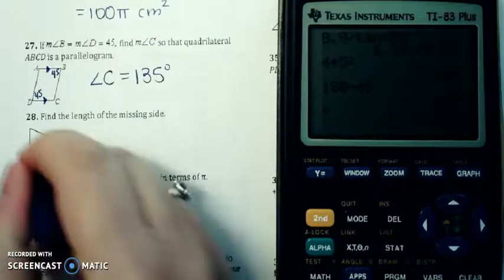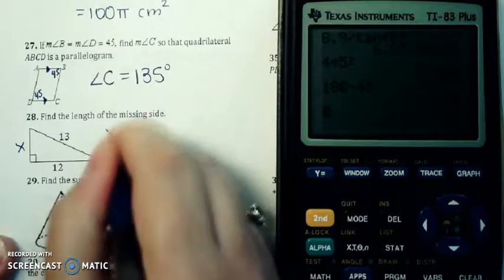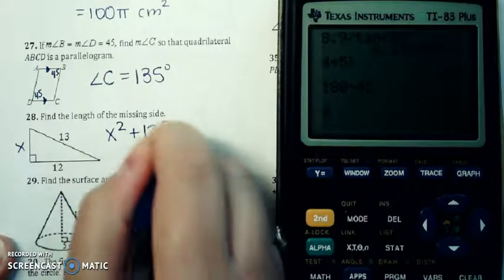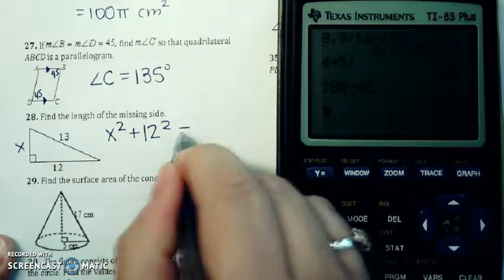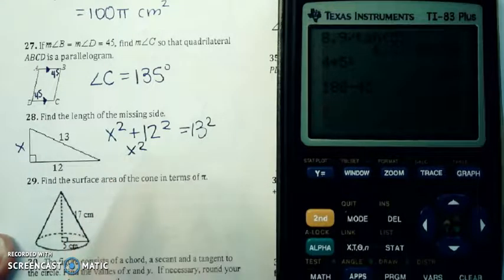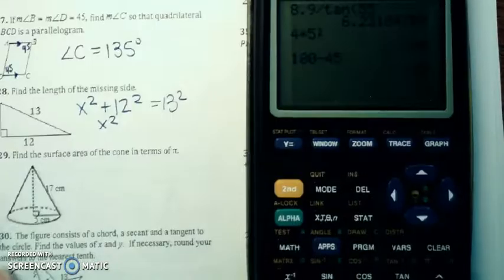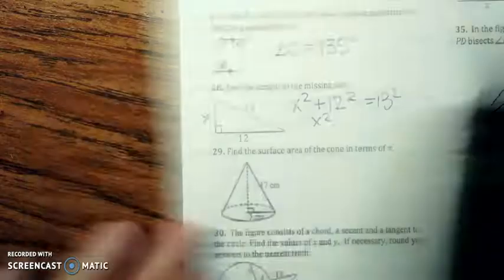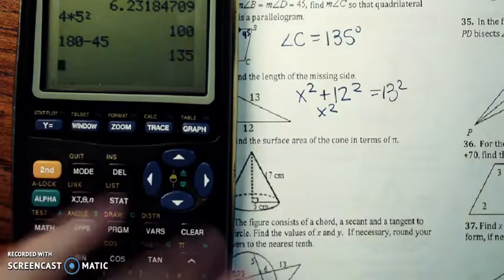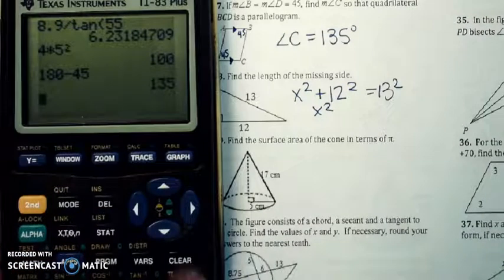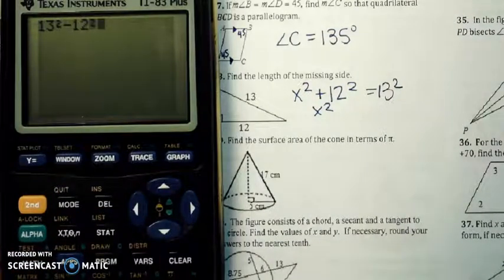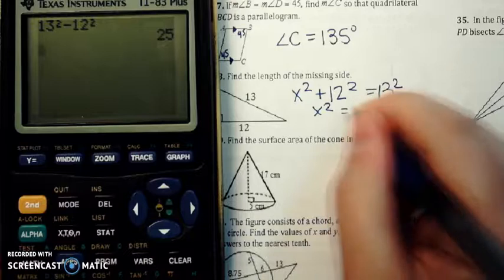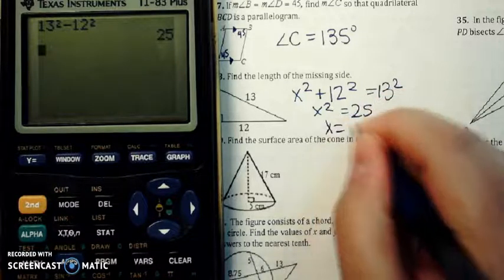Alright, all we're doing here, Pythagorean theorem. We're missing a leg in a right triangle. So the two legs, the sum of the squares of the legs equals the hypotenuse squared. What we're going to end up with here, let me slide this over so you guys can see the calculator better. Let's see, I'm going to do 13 squared minus 12 squared, that's 25, and the square root of 25 is just 5.